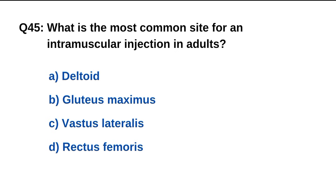Question number 45. What is the most common site for intramuscular injection in adults? The right option is A: Deltoid.